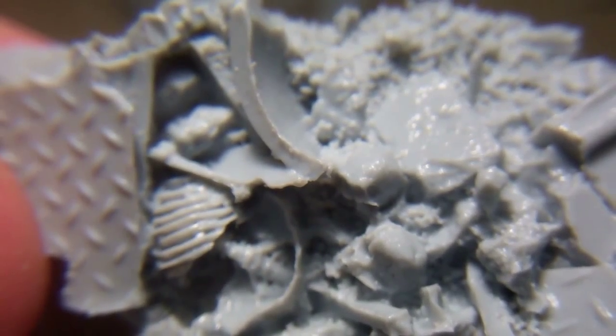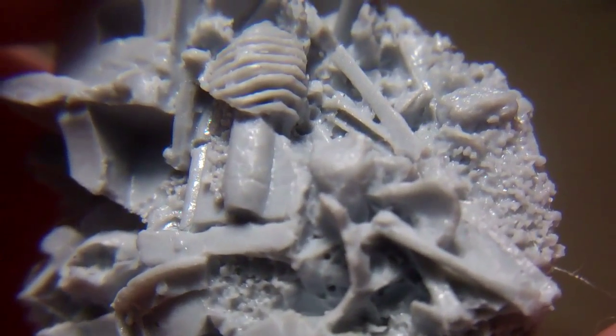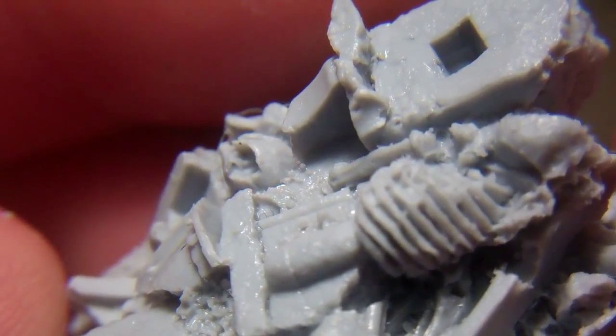When Horus betrays the loyalists on Istvaan III. This is part of the battle where Little Horus and Abaddon go down to kill Loken and Torgaddon, if I've remembered his name right. So this will be the part where Abaddon is facing off with Loken right at the end. You can see that's the big diorama, and this is the decorative base that Abaddon is going to sit on.